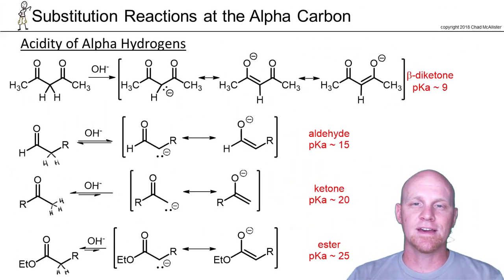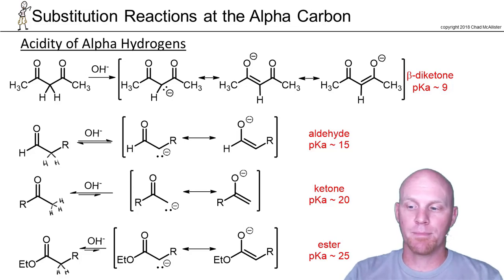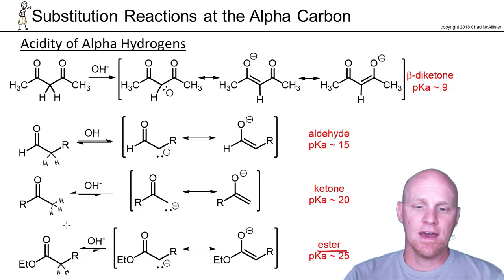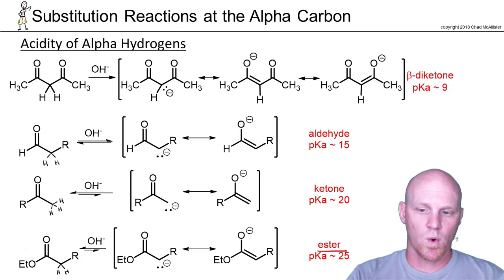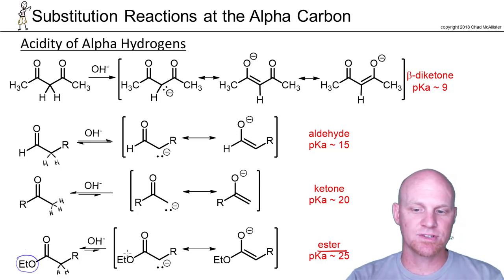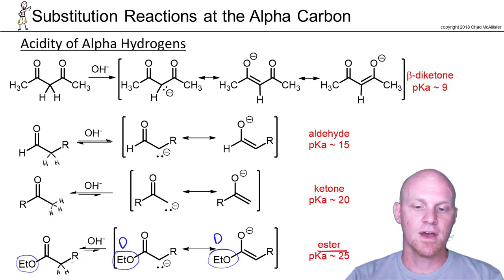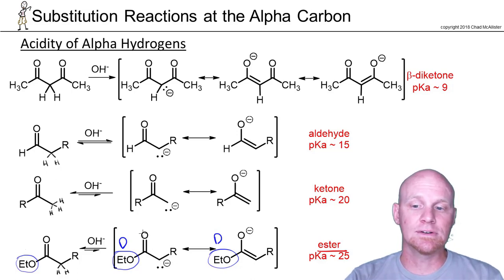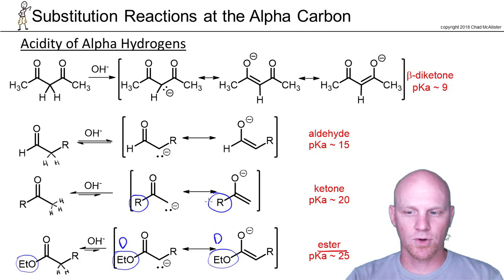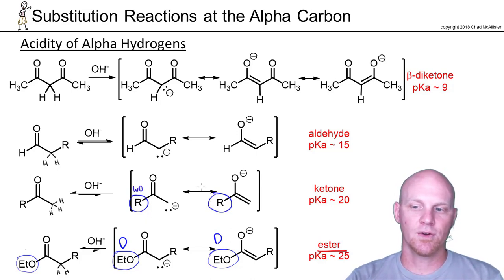Now let's compare the acidity of alpha hydrogens across different functional groups, starting from the bottom up. For the ester, what's on the other side of the carbonyl affects the acidity by affecting the stability of the conjugate base. The OR group is a very strong electron-donating group, and electron-donating groups destabilize bases, making them stronger — which in turn makes the corresponding conjugate acid weaker. So of the functional groups listed — ester, ketone, aldehyde — the ester is the weakest acid. For the ketone, we just have an alkyl chain on the other side, which is a weak donating group.